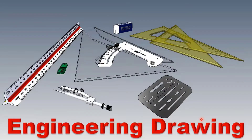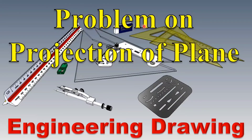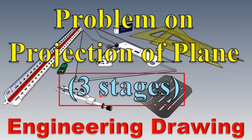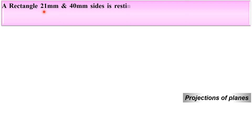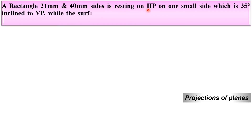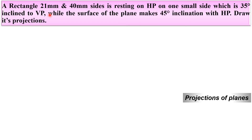Welcome to my engineering drawing playlist. Today I will be explaining a problem on projection of plane, and we are going to see three stages in this problem. A rectangle 21 mm by 40 mm sides is resting on HP on one small side which is 35 degrees inclined to VP, while the surface of the plane makes 45 degree inclination with the HP through its projection.